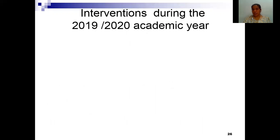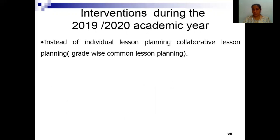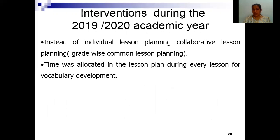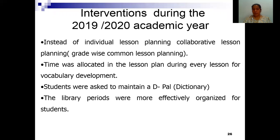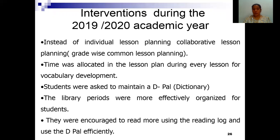Interventions were taken during the academic year 2019 and 2020. As the first step, instead of individual lesson planning, collaborative lesson planning was done. Then time was allocated in every lesson for vocabulary development. Students were asked to maintain a DPAL, which means their own personal dictionary. The library periods were more effectively organized with a teacher accompanying the students, and students were encouraged to read more and use their DPAL more effectively.